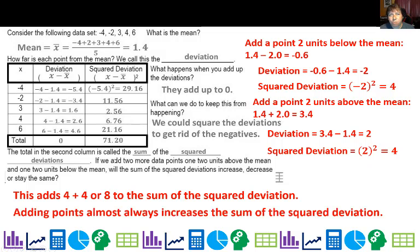So I would take this 71.2 and add this extra 8 to it. So adding more points almost always increases the sum of the squared deviation.